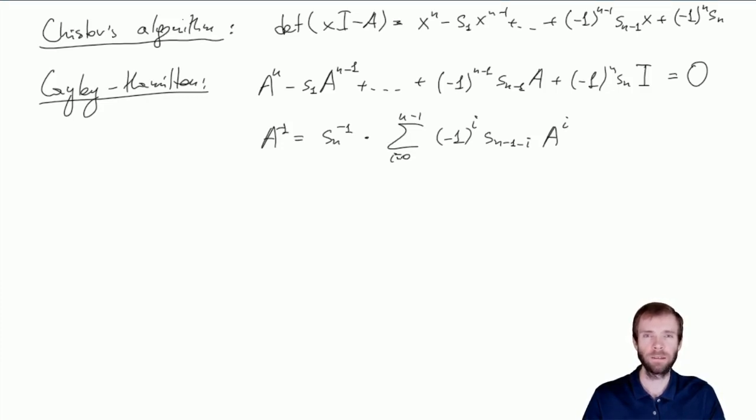So we see that our ability to do some matrix operations fast, like computing determinant or characteristic polynomial, implies that we are able to compute, say, inverse matrices fast. And if we are able to compute inverse matrices fast, we are able to solve systems of linear equations fast.